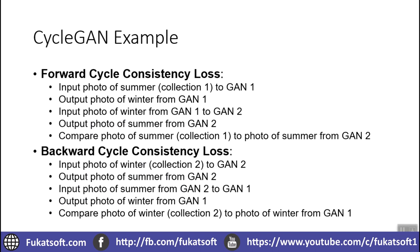We can calculate both forward and backward consistency losses. In forward consistency: if we input a summer photo, GAN1 generates a winter photo, that is passed to GAN2, and GAN2 generates a summer photo. We compare this generated summer photo with the original input summer photo. There is also a backward consistency loss: if we input a winter photo to GAN2, it generates a summer photo, which is passed to GAN1, and the output is compared with the original winter input.